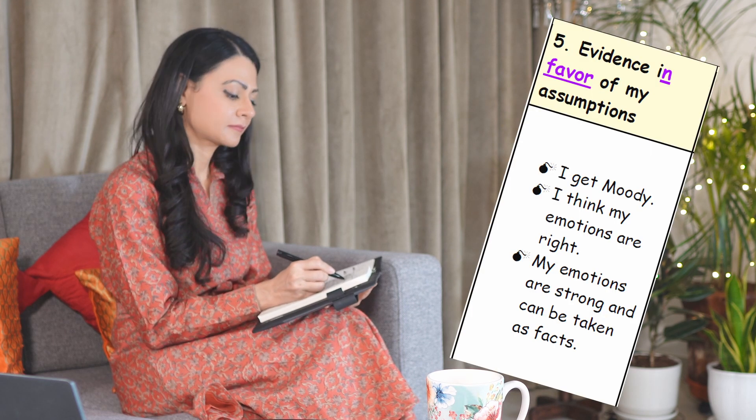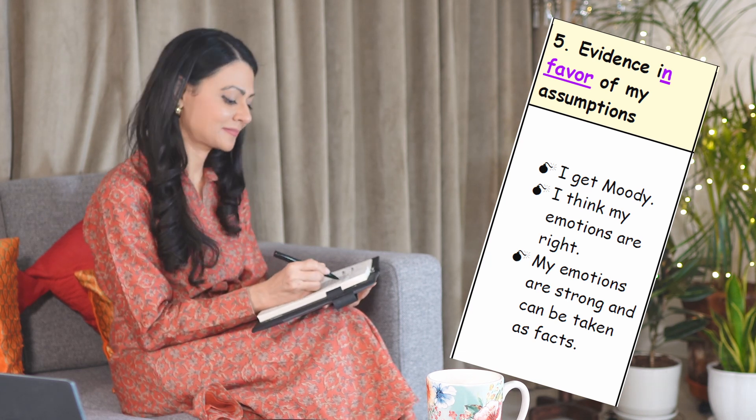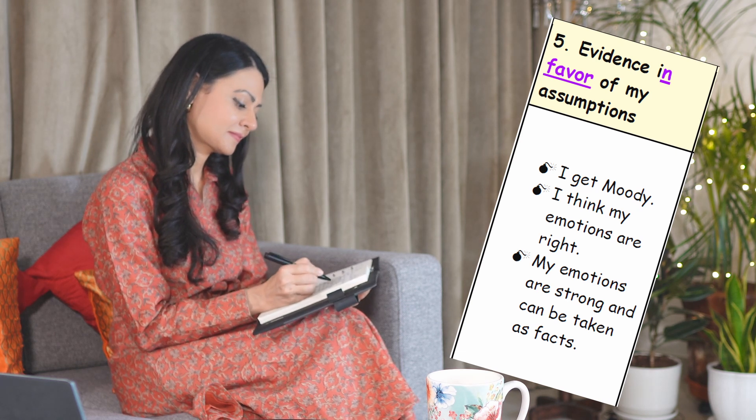First, I'll write down the evidence in favor of my assumptions: I get moody and I sometimes consider my emotions as facts — this could be emotional reasoning. When thinking about evidence against my storyline, I realized that on multiple occasions my friends have told me I'm fun to be around, that I have a great sense of humor, that they want to hang out with me, and that they get to learn a lot from me. I also realized I pretty much didn't know anybody in that group, so it's logical I wasn't invited.